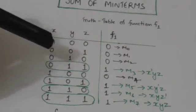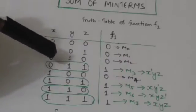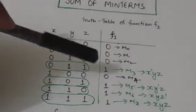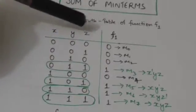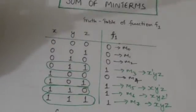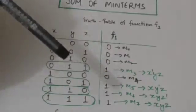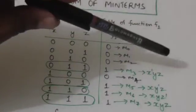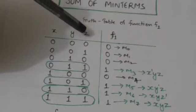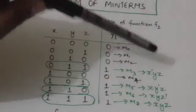The first bit of this number corresponds to binary variable x, the second bit corresponds to y, and the third bit corresponds to z. The first bit is 0, so x will exist in its complement form. The bit corresponding to y is 1, so y will exist in its normal form. The bit corresponding to z is 1, so z will also exist in its normal form.